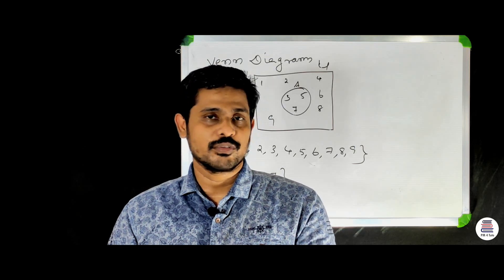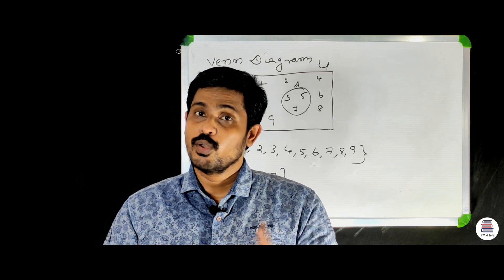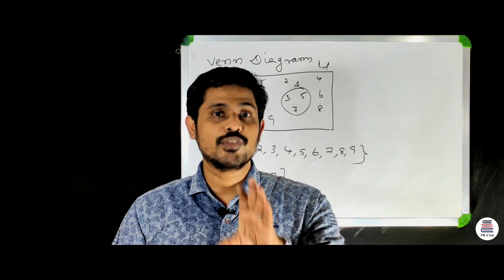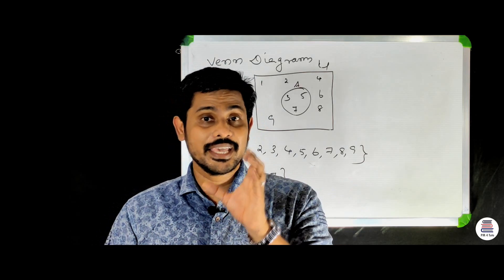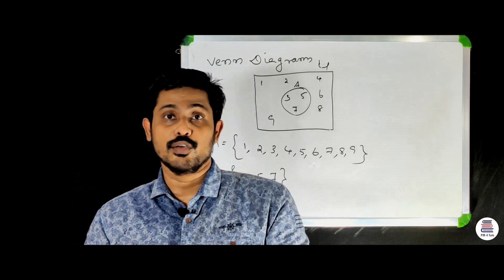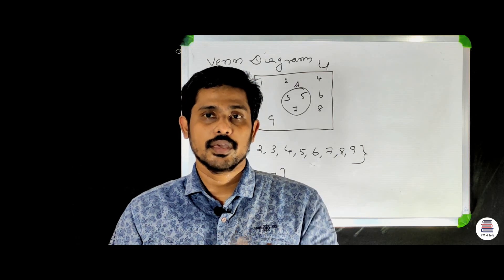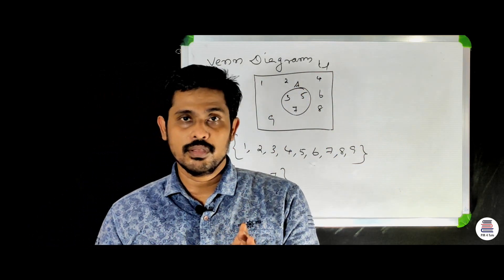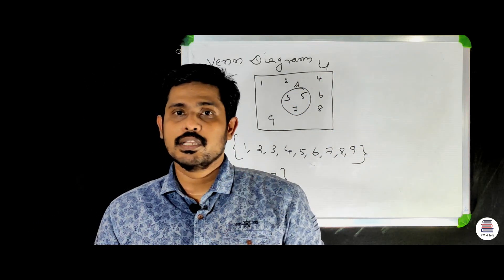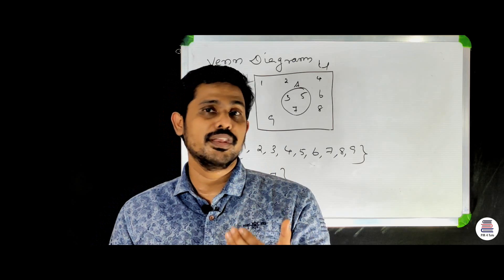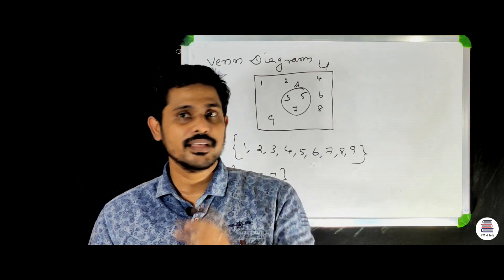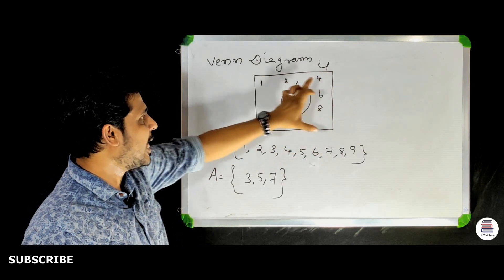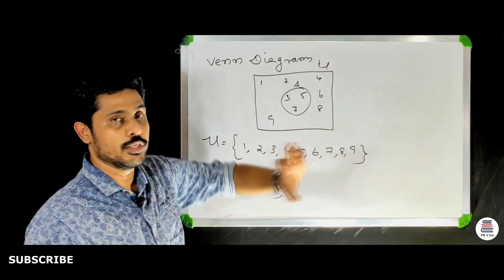What is a Venn Diagram? Most of the relationships between sets can be represented by means of diagrams, which are known as Venn Diagrams. Venn Diagrams represent sets using rectangular regions with circles or ellipses. They are named after the English logician John Venn.